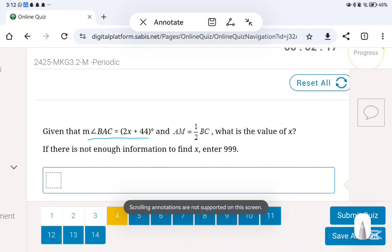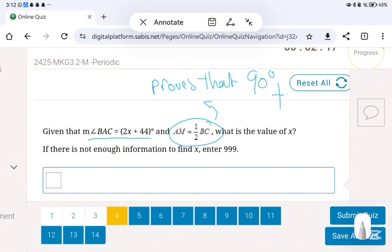So how do we know what to make equal and what to subtract or add or divide? Here, by telling us that AM is half of BC, it proves to us that it's a 90 degree angle. So 2x plus 44 equals 90. Then you do it, you will get 2x equals 46 and then x equals 23.